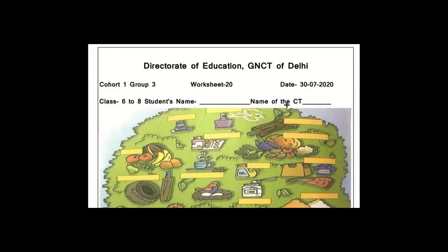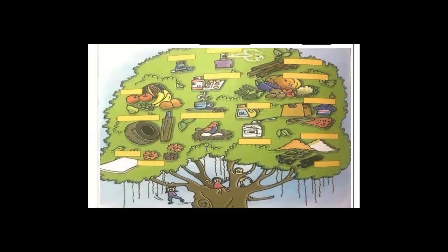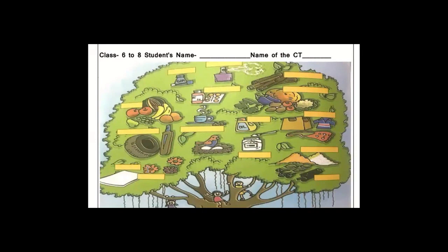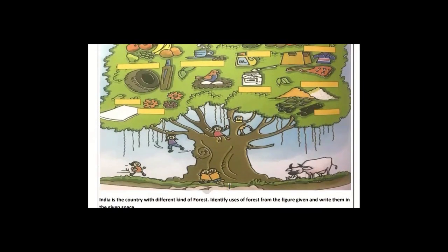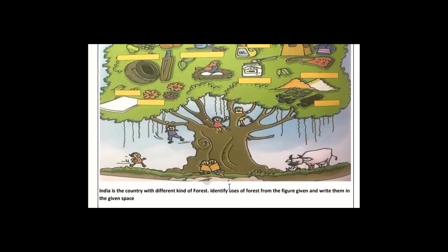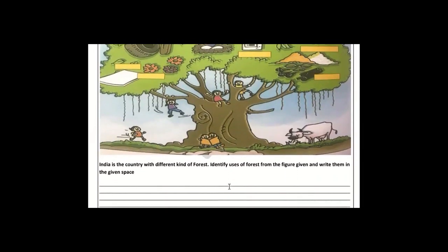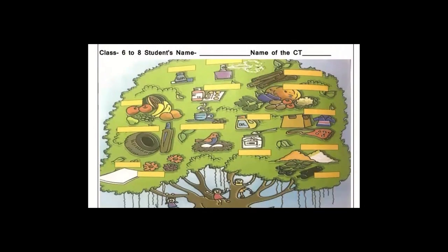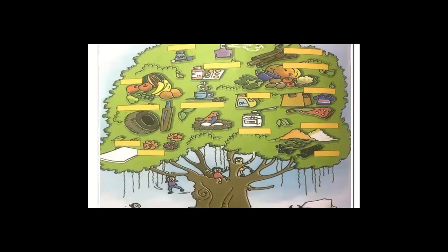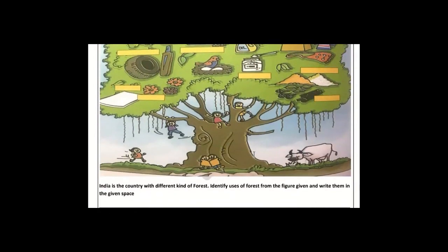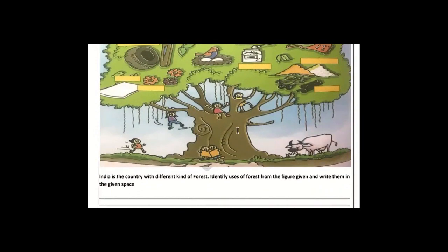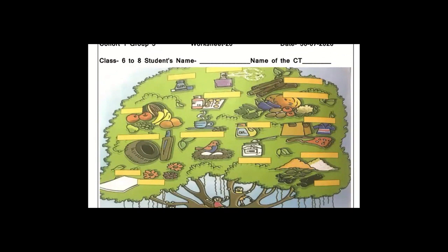In English, in the worksheet, I will show you a picture. There are many things in the picture — there is some food, oil, medicine, children playing, and also animals that are eating. There are also fill-in-the-blank questions. Tell them what the names of these things are. I hope you have done this — now we will check them. Let's open your worksheet and open your answers.